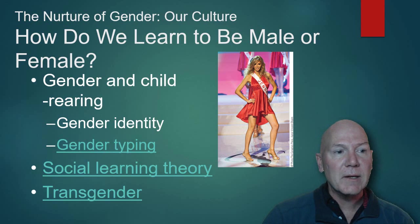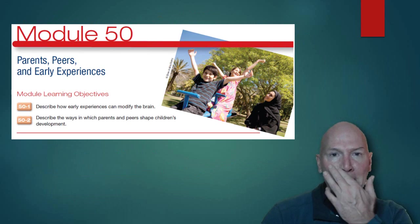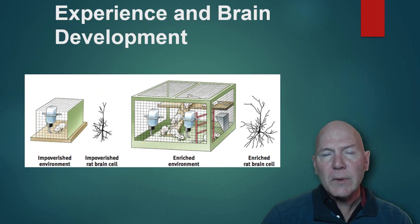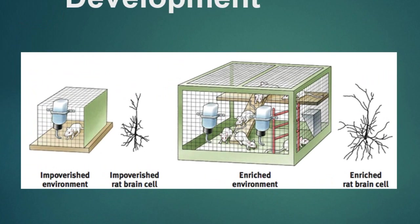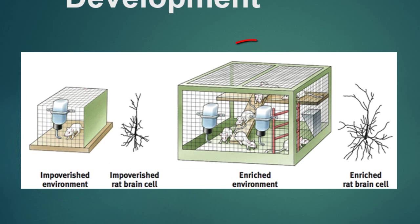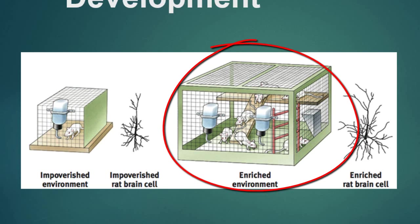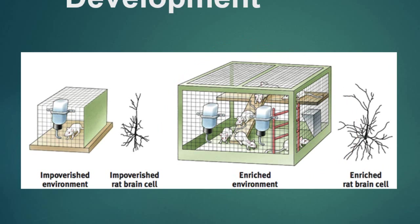What about parents, early experiences, and friends? Early experiences do shape your brain. There's a famous Rosenzweig study using rats: one rat lived in an impoverished environment with just food and water and nothing to do, while another lived in an enriched environment — like a little rat party house — with toys and other rats to interact with. After a period of time, the brain cells of rats in the enriched environment were much more developed than those in the impoverished environment.